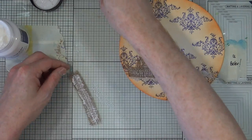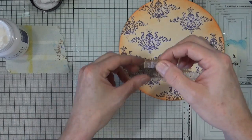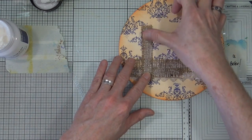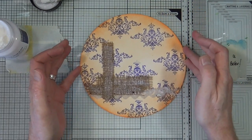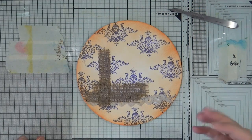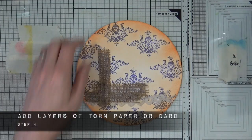So as this Slapiton, which is like a super thick gel medium, takes time to dry, I'm going to put the page to one side while I work on the embellishments of the next step, which is to add layers of torn paper or card.